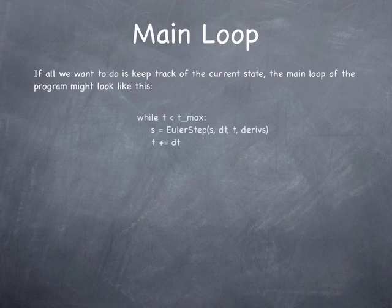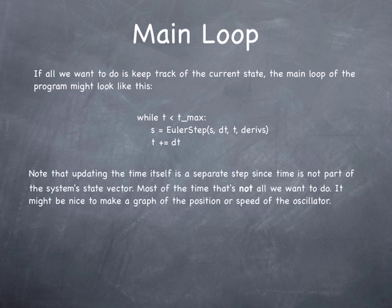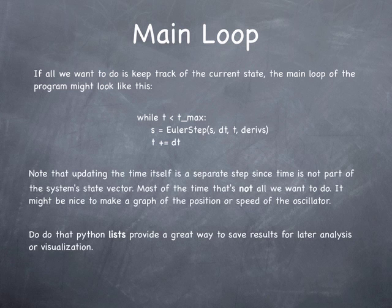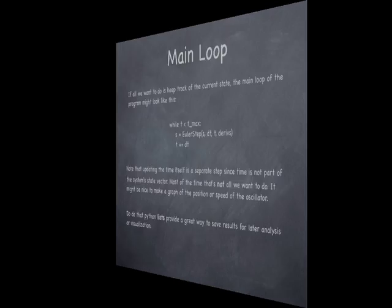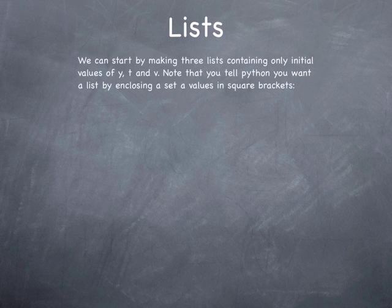The main loop now looks something like this. It's quite simple. It looks a lot like the main loop did when the state wasn't a vector. And notice that if all we care about is the state, this main loop is all we need.